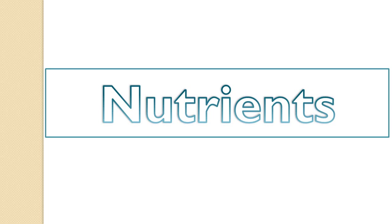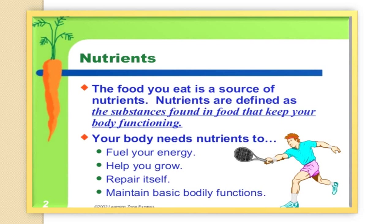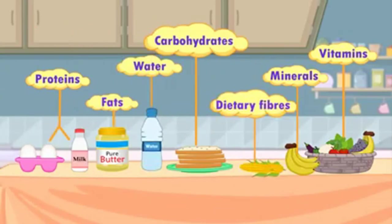We eat food because there are certain substances present in it that make us healthy and strong. These substances are called nutrients. There are a variety of nutrients in our diet: carbohydrates, proteins, fats, vitamins and minerals. In addition to these, our body needs a lot of water and roughage too.